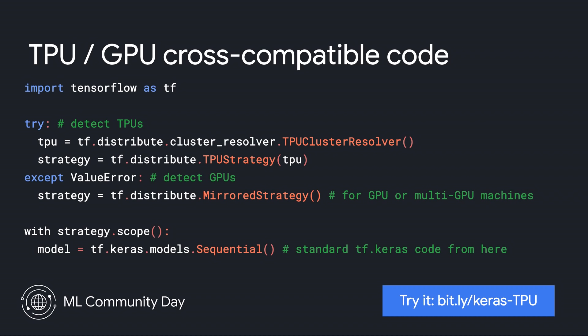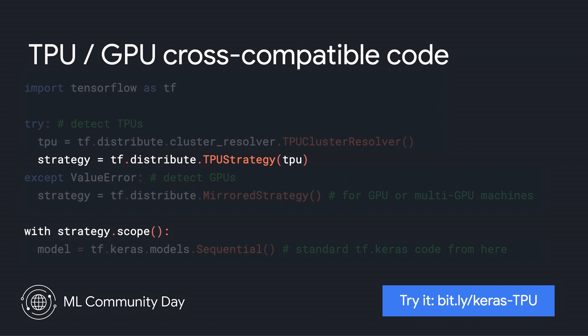TensorFlow has introduced the Distribution Strategies API, which allows you to write cross-compatible code for a wide variety of hardware configurations, such as TPUs, TPU pods, GPUs, as well as multi-GPU machines. As you can see, with only a few lines of code, you can detect the hardware and select the appropriate distribution strategy. TPU strategy for TPUs or TPU pods mirrors the mirrored strategy for GPUs or multi-GPU machines. To use a distribution strategy, instantiate your model in the strategy scope and you are done. The rest is regular Keras code. You can also try it out with the Colab sample at bit.ly/keras-TPU.